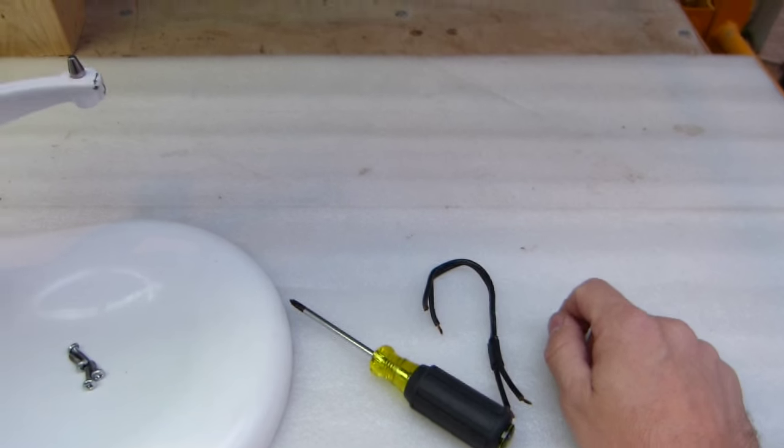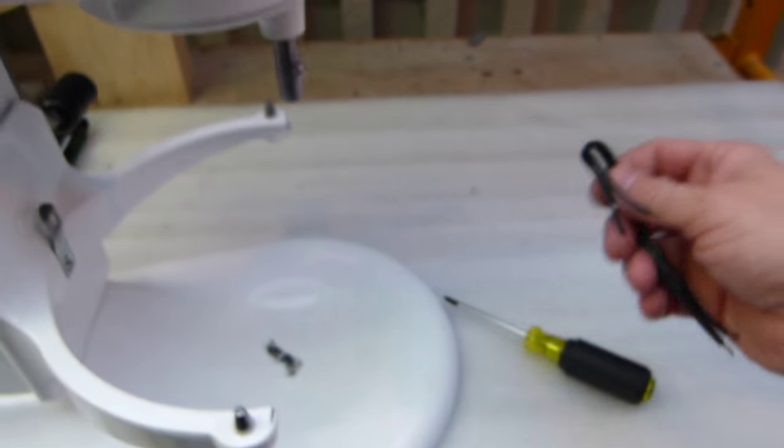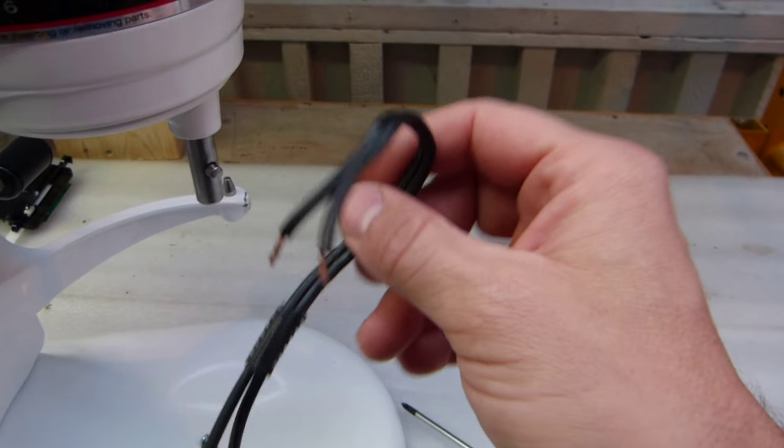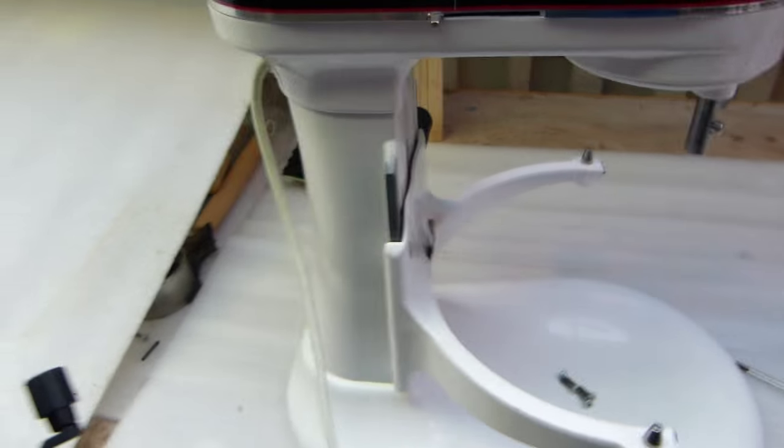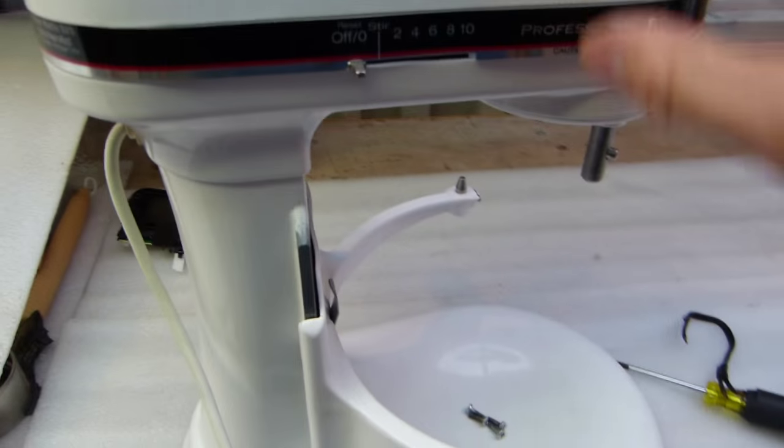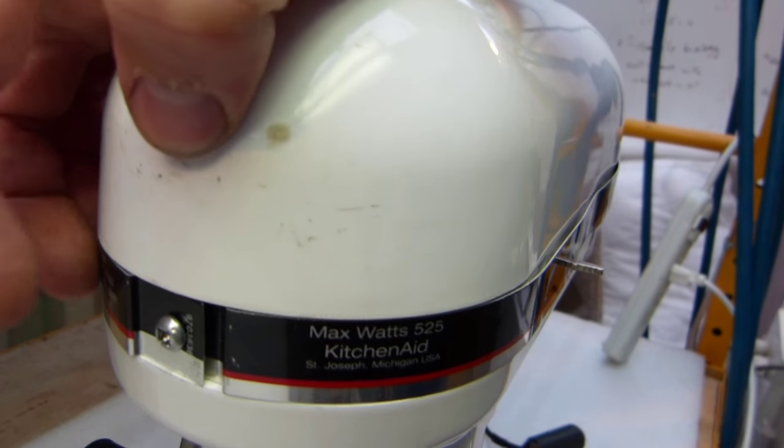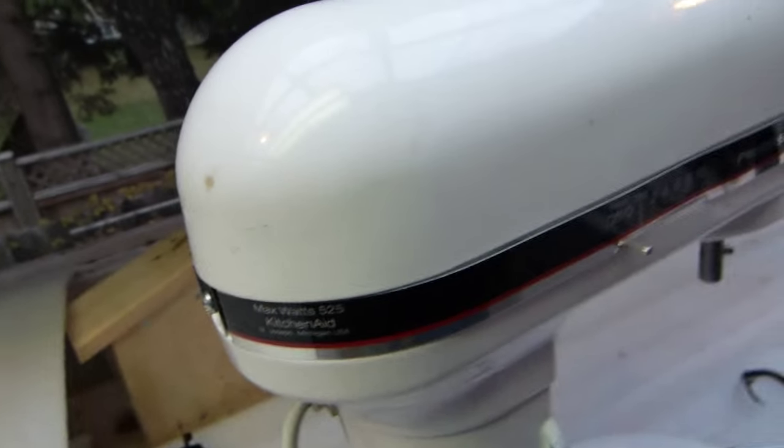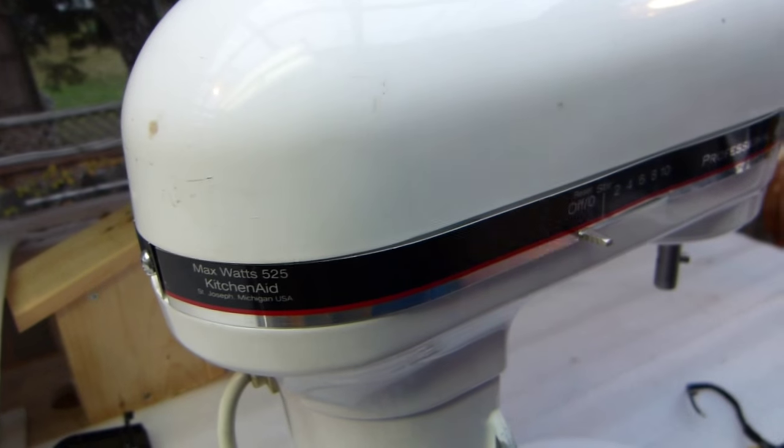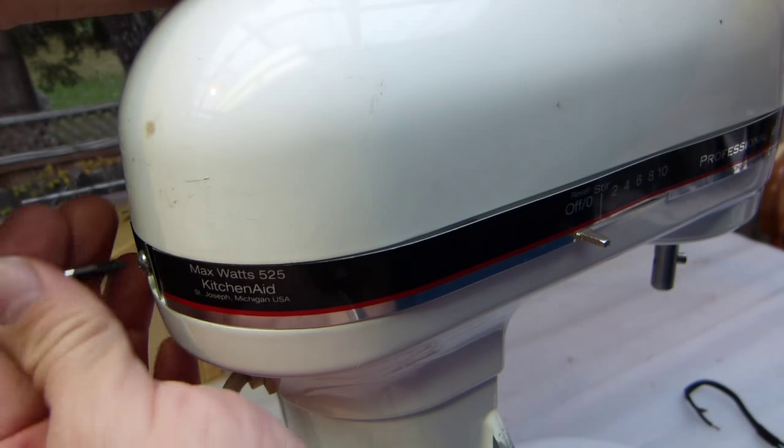All you need is a Phillips number two screwdriver and two pieces of wire, which I found in this form. Repair starts at removing this band which is held in place by a single screw here at the back, and then we can remove the lid and access the electrical components. Let me put you on the tripod here and I'll walk you through this real fast.